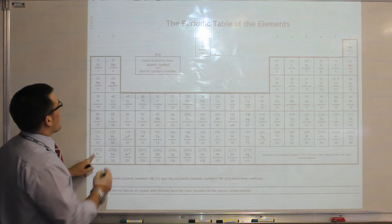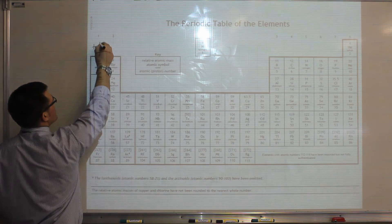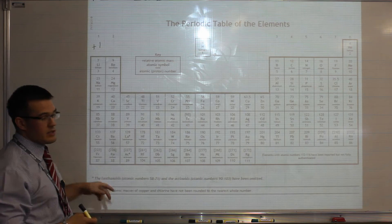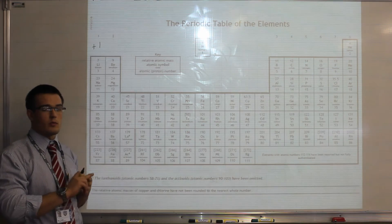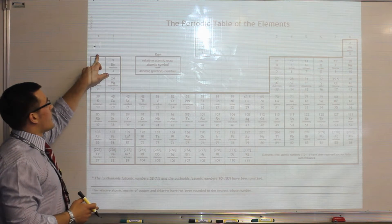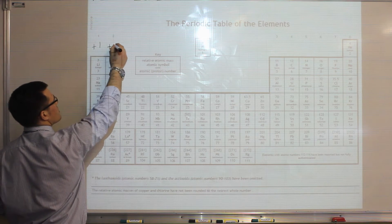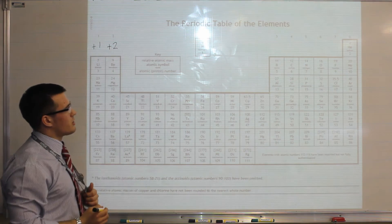The first thing you should do is look at group 1, which is this column here, and at the top of that write plus 1. That's because every element in group 1 has one electron in its outer shell, so it will lose that electron and form a plus 1 charge. Group 2 will all form plus 2 charges.